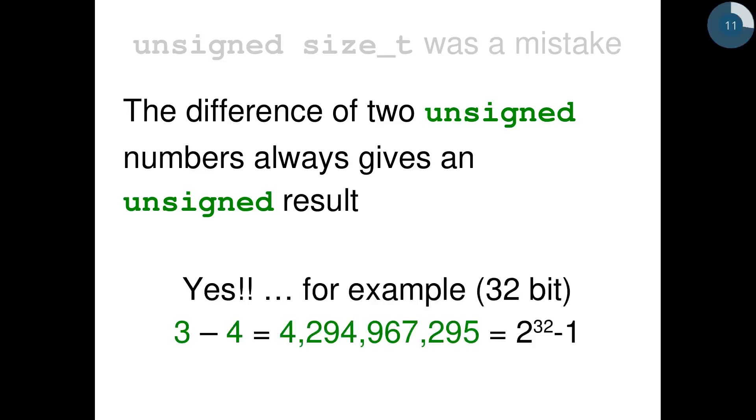And that's true. For example, on a 32-bit platform, subtracting 3 minus 4 with unsigned numbers gives as result 4,294,967,295. That is, 2 raised to the power of 32 minus 1.